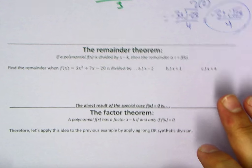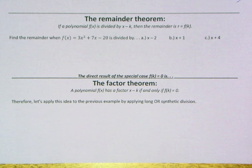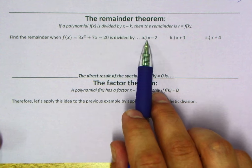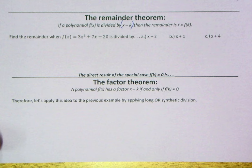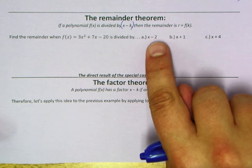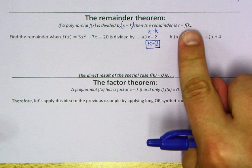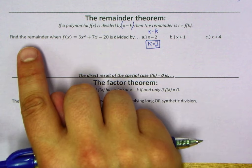Without further ado, let's take a look at some of our new theorems, starting with the remainder theorem. To show its foundation, I want to start with synthetic division, since we're not going to apply that every single time. It says find the remainder when f(x) equals 3x squared plus 7x minus 20 is divided by x minus 2. The remainder theorem tells us that if a polynomial is divided by a linear binomial x minus k, then the remainder r equals f(k). So if I plug in k — which here equals 2 — I should get the same value as the synthetic remainder.